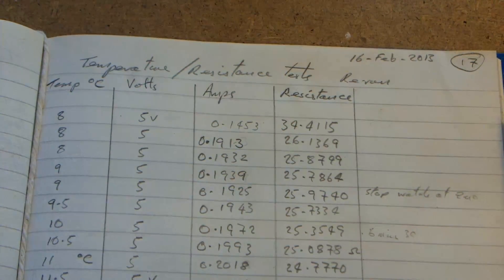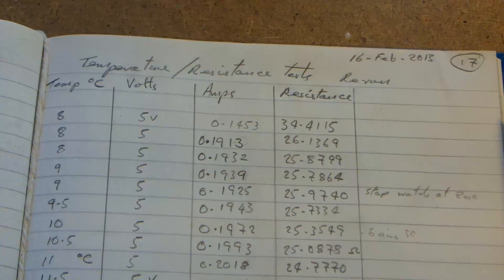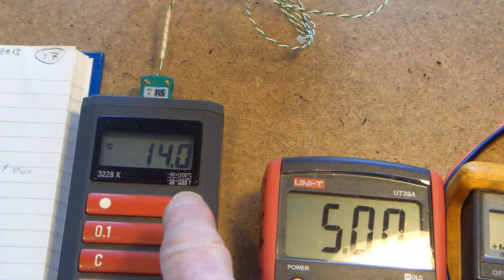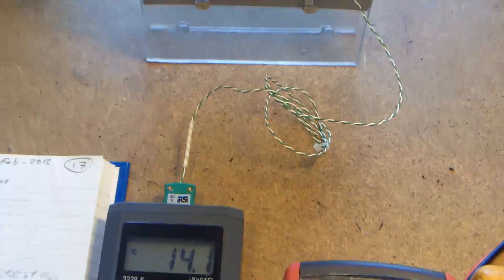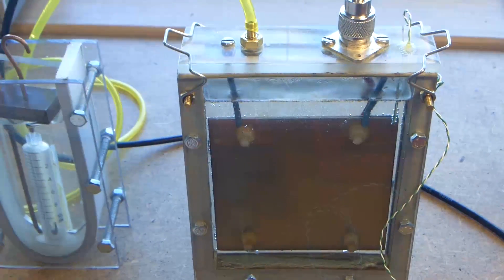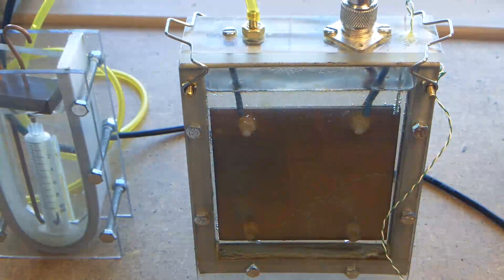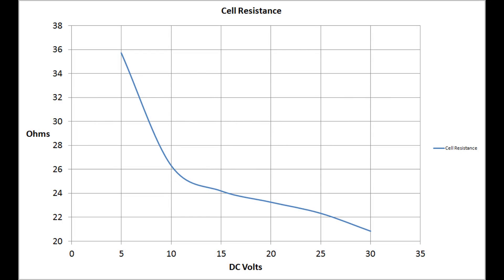The trouble with an inquisitive mind is every question you answer begs several more. By the way, to get this temperature rise, all I'm doing is relying on the wattage lost in the cell — so from its resistive losses it's just slightly warming the cell, and that's how I'm climbing up in temperature.